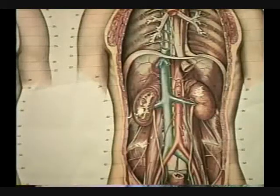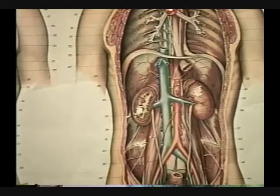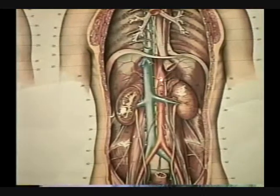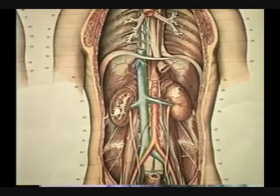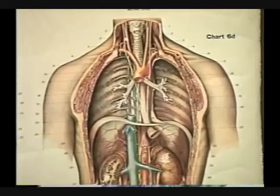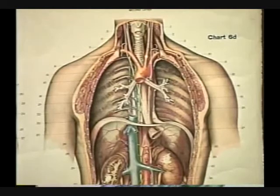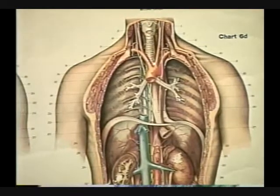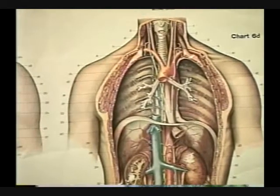Looking at this chart, we've got a deep dissection of the thoracic and abdominal cavity. The heart's been removed so it shows quite nicely the aortic arch coming around and down, all the way down there, and this shows very nicely the branches. This artery is the brachiocephalic. Common carotid here. The second branch is the common carotid. Third branch is the left subclavian.